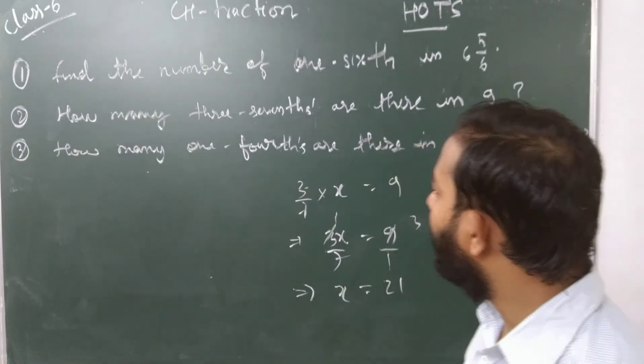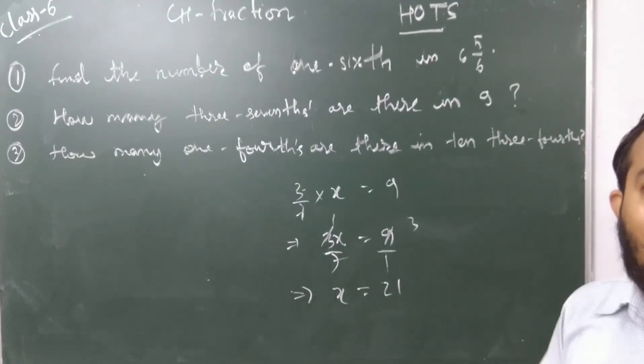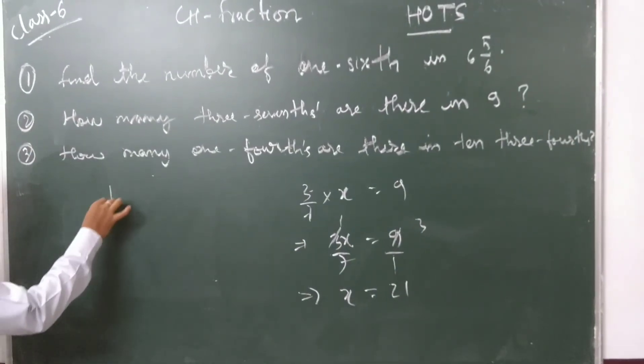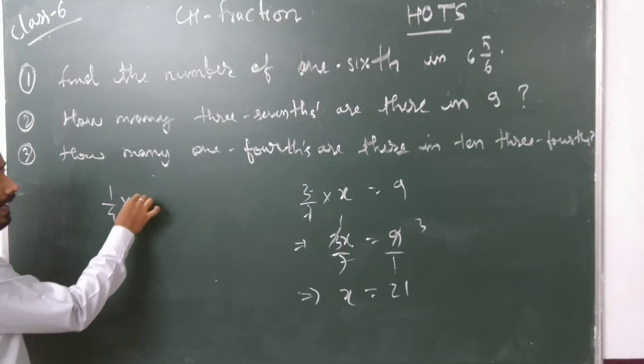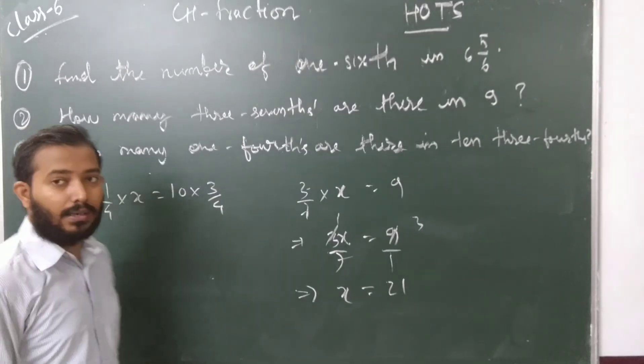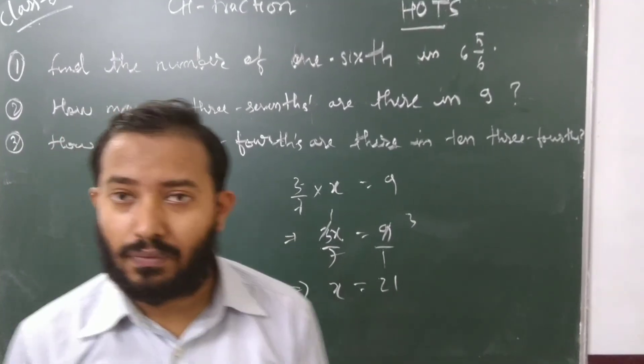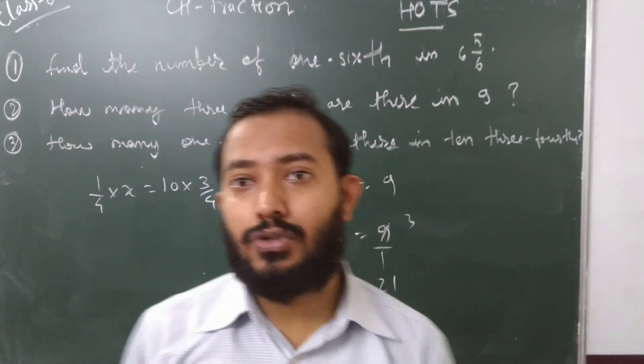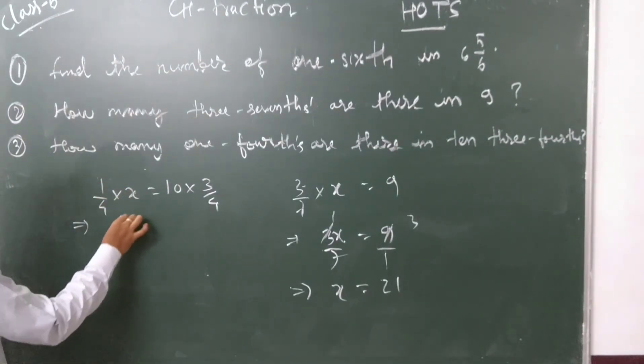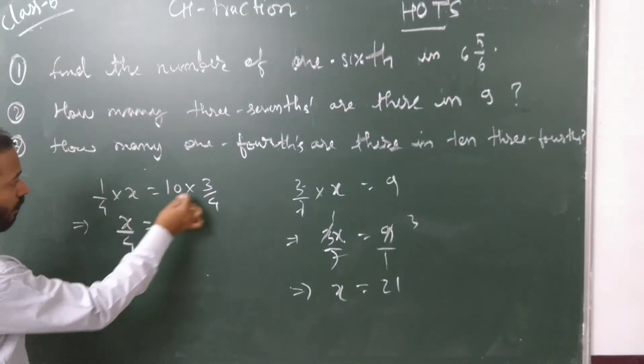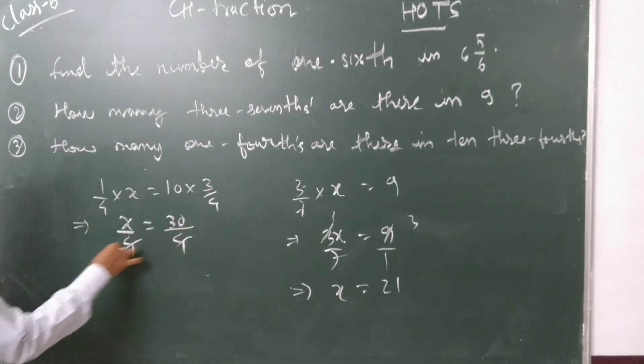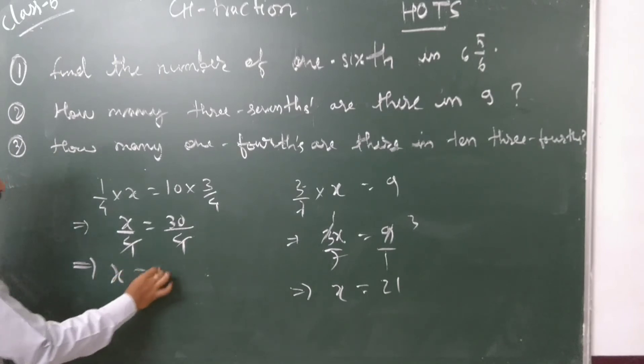Now for the third one: how many one-fourths will give us 10 times 3/4? So 1/4 times x equals 10 times 3/4. Remember, not 10 and 3/4, but 10 times 3/4. You have to solve: x/4 equals 30/4. The 4 will cancel, and you get x equals 30.